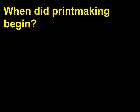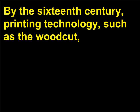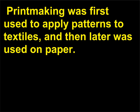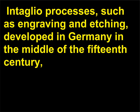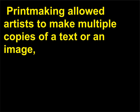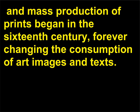When did printmaking begin? By the 16th century, printing technology such as the woodcut had been around for hundreds of years, first developing in China in the 5th century. Printmaking was first used to apply patterns to textiles, and then later was used on paper. Intaglio processes, such as engraving and etching, developed in Germany in the middle of the 15th century, evolved from techniques used by goldsmiths and jewelers. Printmaking allowed artists to make multiple copies of a text or an image, and mass production of prints began in the 16th century, forever changing the consumption of art images and texts.